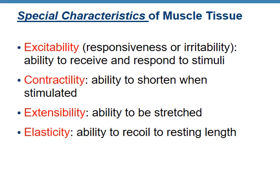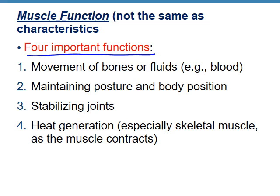Here are the four special characteristics of muscle. Muscle is excitable — it can respond to a stimulus. If your brain sends a message to your muscle, the muscle can respond and usually contracts, which is contractility. When a muscle is stimulated, it usually shortens. Extensibility means muscles can be stretched, and then they have elasticity — they can recoil. Elasticity means that once stretched, the muscle will snap back into its original form.